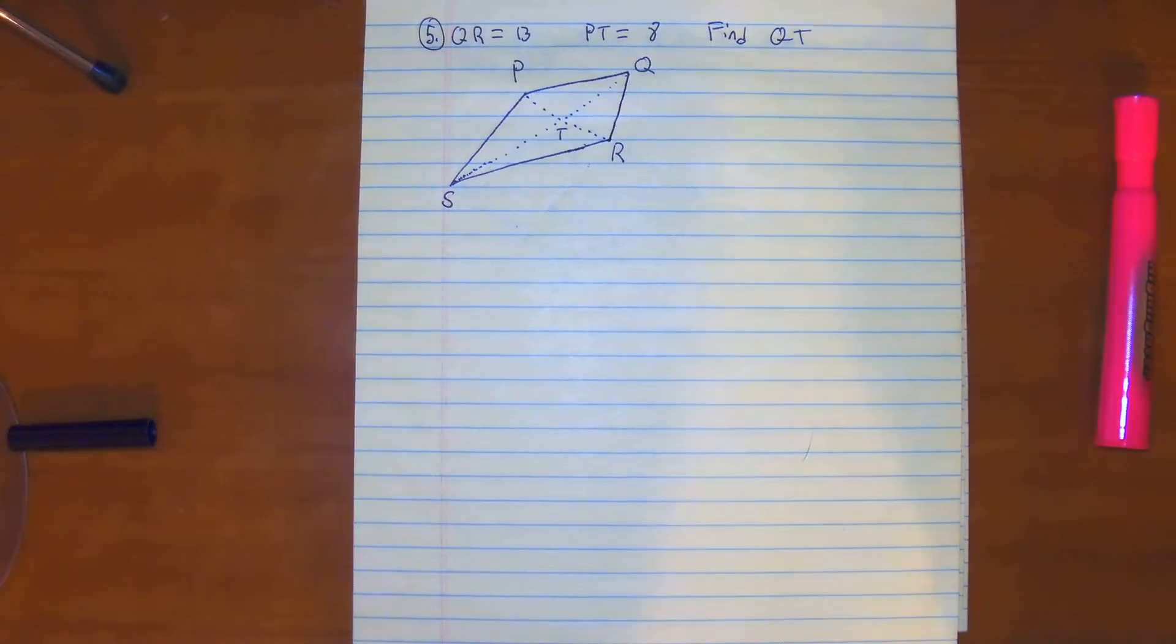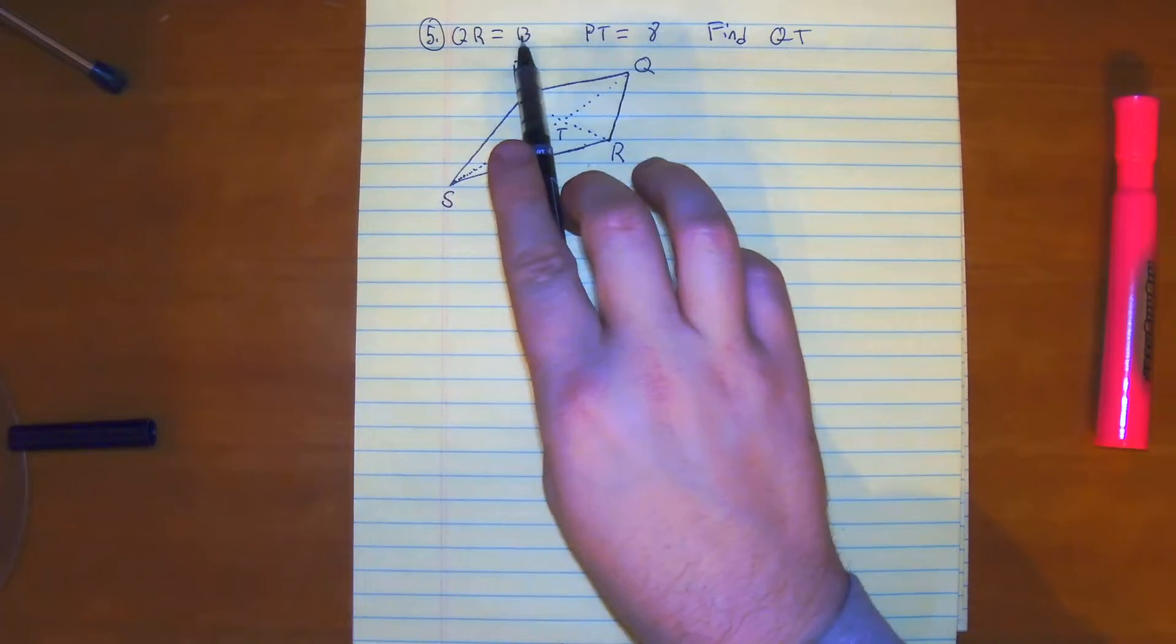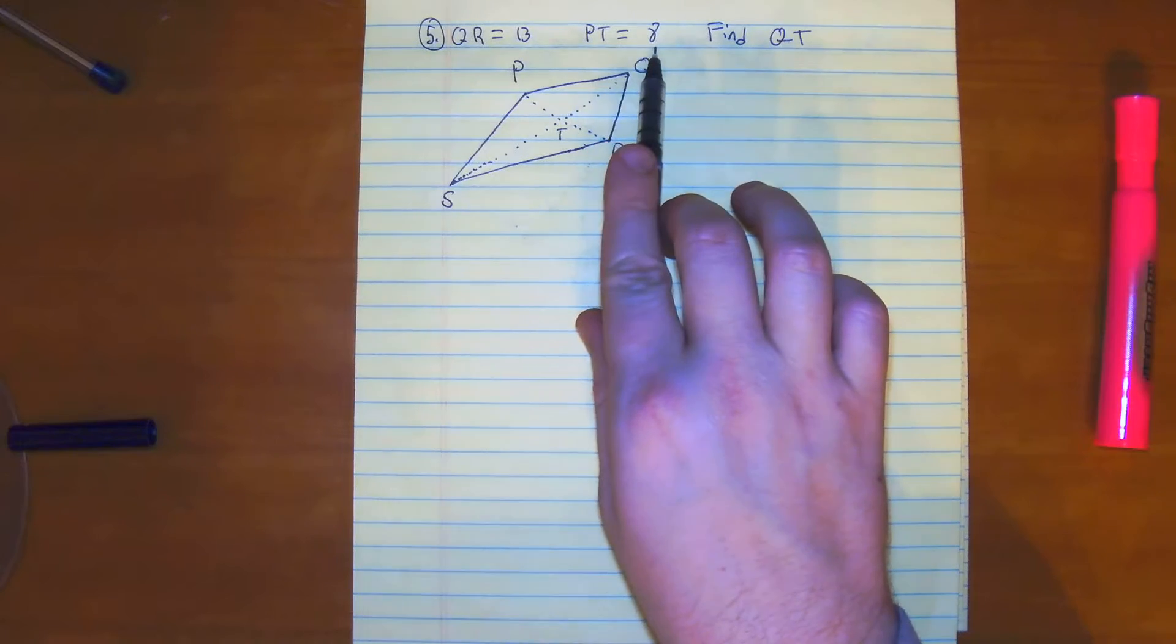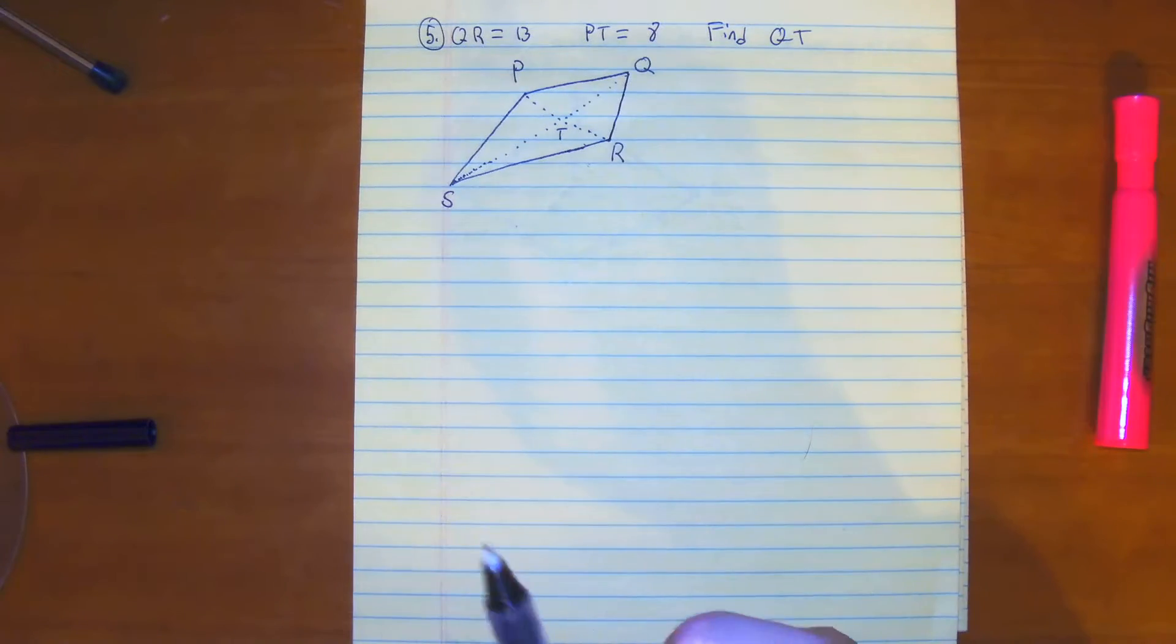Looking at number 5, we have the following information: QR is equal to 13, PT is equal to 8, and we want to find the value of QT.